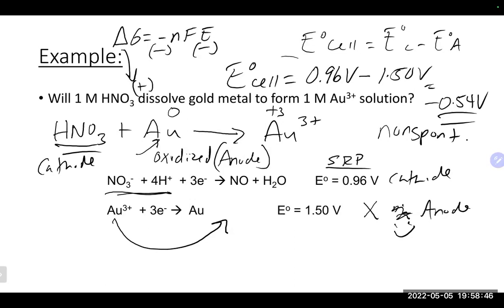In the absence of additional information - like the first several examples where it just says you're making a cell from these two things - you can go by whichever one is more positive as your cathode. But if they give you any information about how it's happening, you need to look and see who's being oxidized and who's being reduced, and follow that.